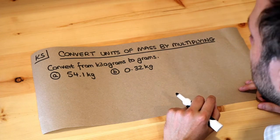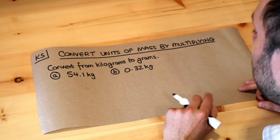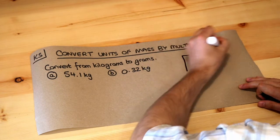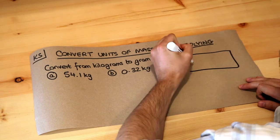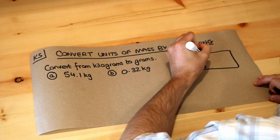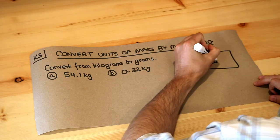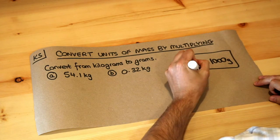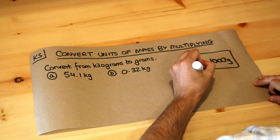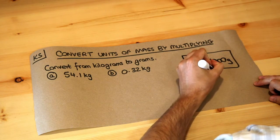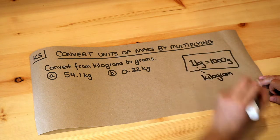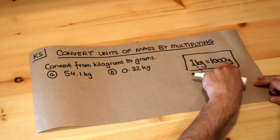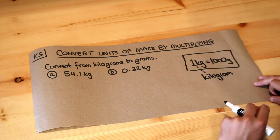We just need to know how to convert between different units of mass. The only thing I'm going to cover in this video is that one kilogram is equal to a thousand grams, and that kg is short for kilogram. The word kilo means a thousand, so one kilogram is one thousand grams.